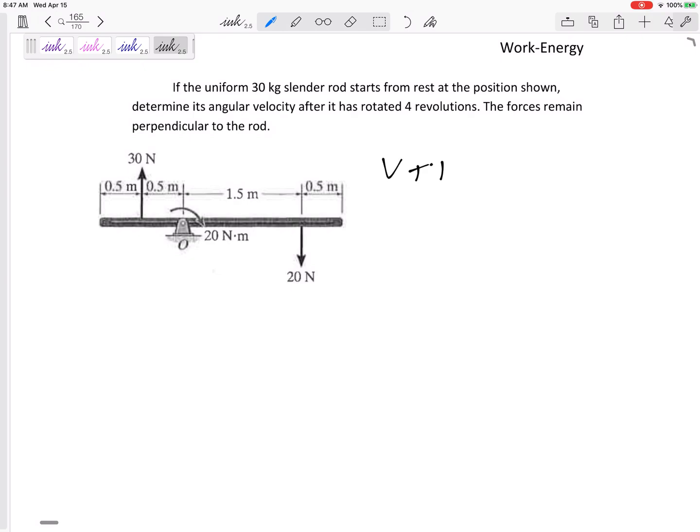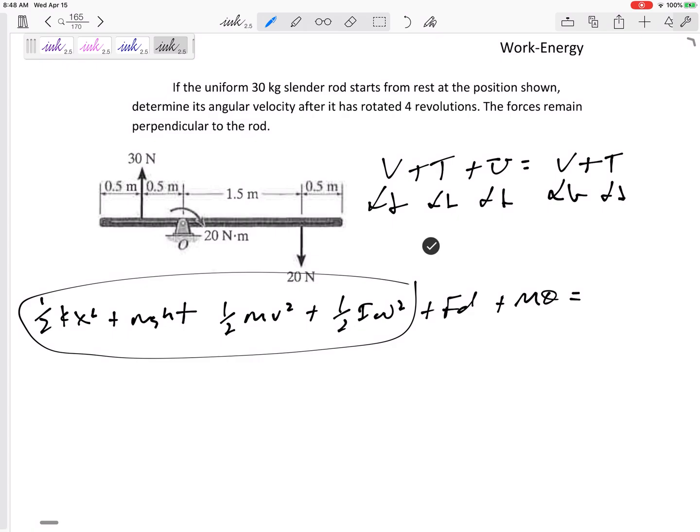We're going to use conservation of energy: V plus T plus non-conserved work equals V plus T. Each of these has two terms or could have two terms: the one-half kx squared, obviously there's not a spring right here, the mgh, one-half mv squared, the one-half I omega squared, any Fd, any m theta.